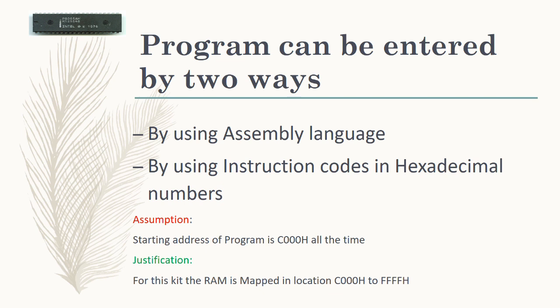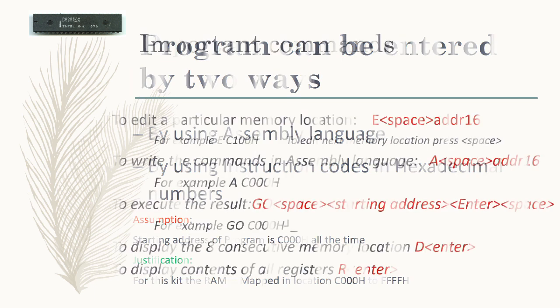The second method is entering the program using instruction codes — that is, hexadecimal numbers. You can enter the program quickly and verify that the instruction codes you are using are correct. As far as this Dynalog kit is concerned, the starting address of the program is always C000H, because the RAM is mapped from C000H to FFFFH.